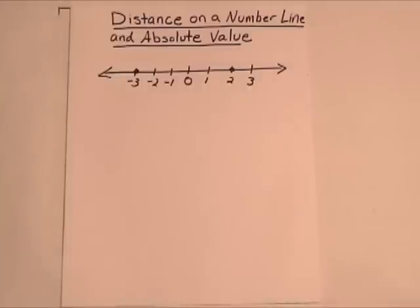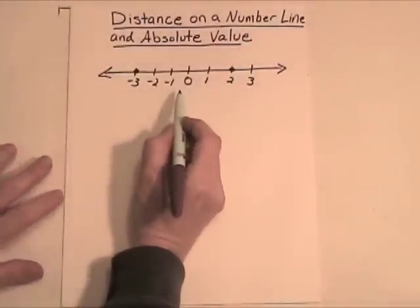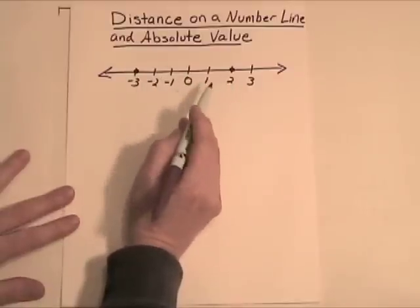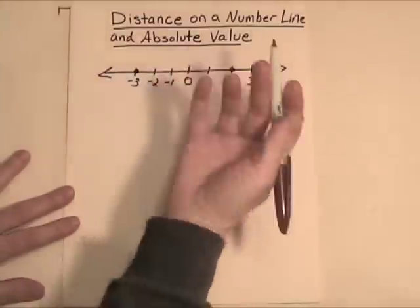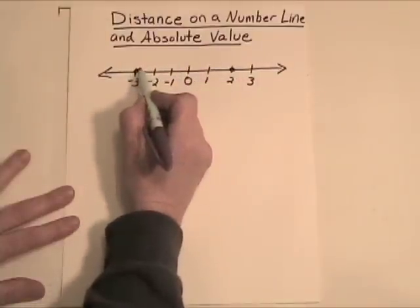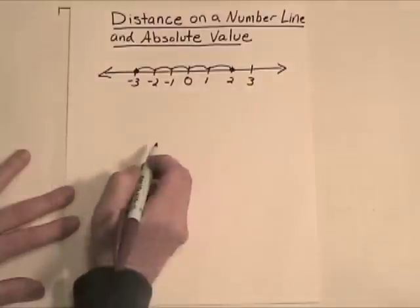Let's take a look at two numbers, negative 3 and positive 2. The question is, how far apart are those on the number line? Well, we can look at it visually if we happen to have a number line in front of us. One, two, three, four, they're five jumps apart.